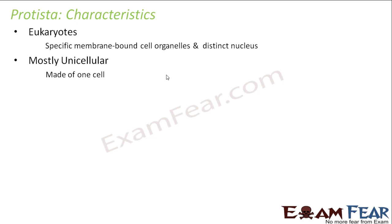Protists are mostly unicellular. In Monera, everything was unicellular, but here in Protista, mostly unicellular — there might be one or two which are not unicellular.